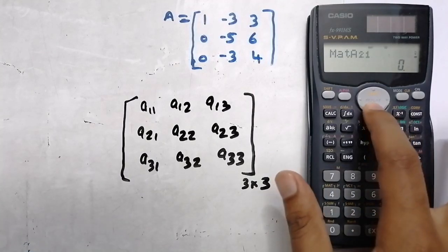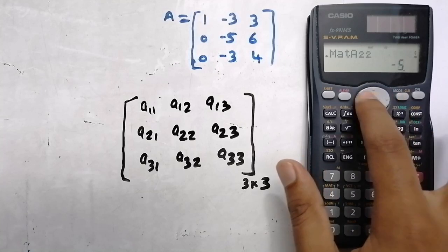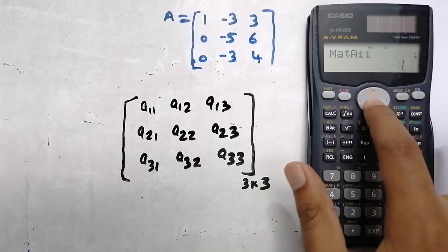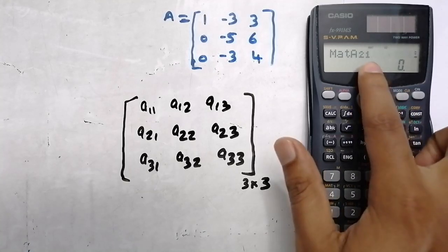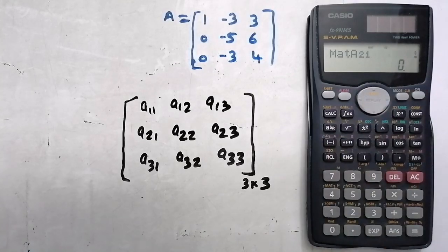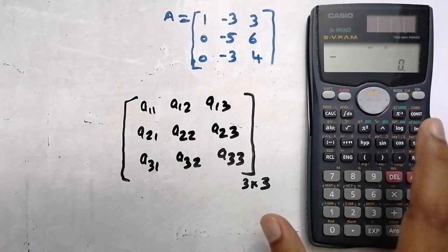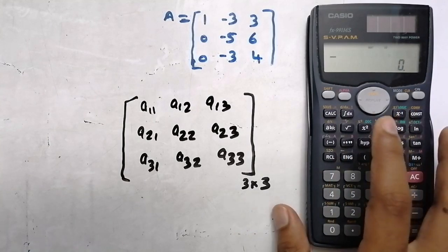You can check whether the values are correct or not by pressing the arrow keys. You can see the elements appearing on screen. Now press the AC button. The value of the matrix is now stored in the calculator.